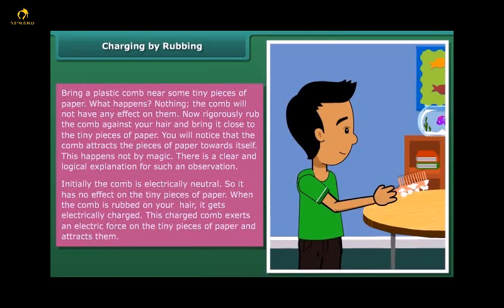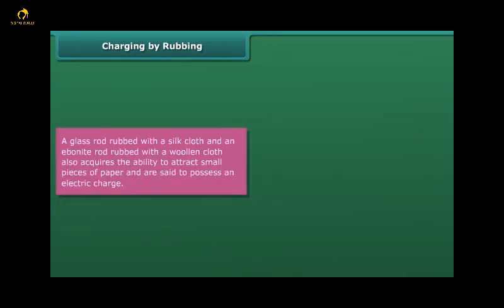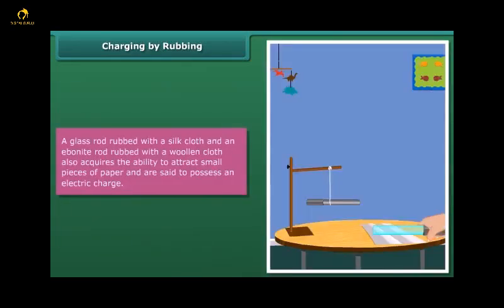When the comb is rubbed on your hair, it gets electrically charged. This charged comb exerts an electric force on the tiny pieces of paper and attracts them. A glass rod rubbed with a silk cloth and an ebonite rod rubbed with a woolen cloth also acquire the ability to attract small pieces of paper and are said to possess an electric charge.